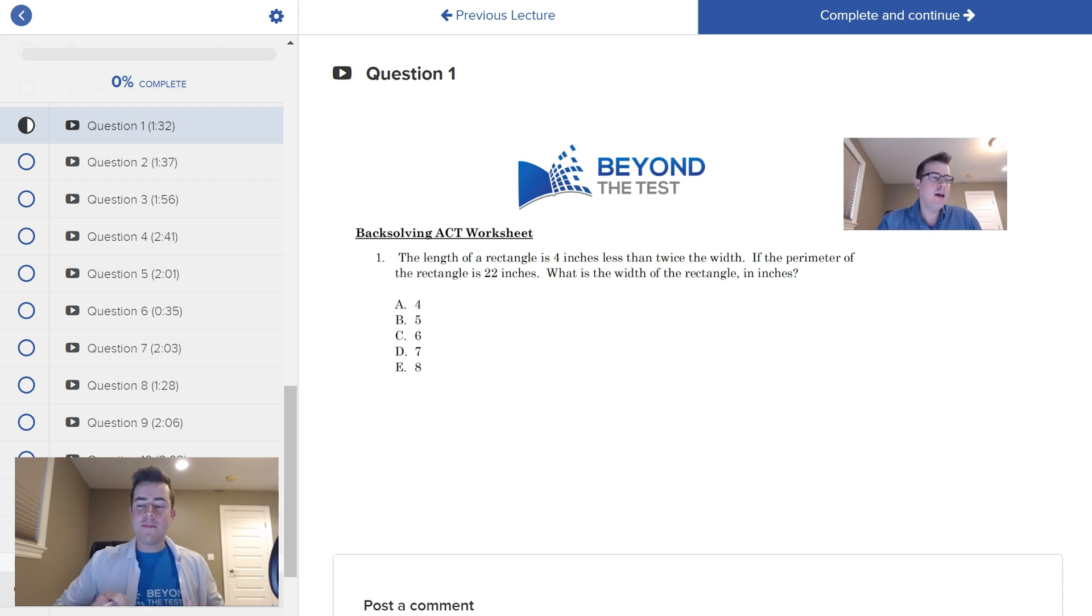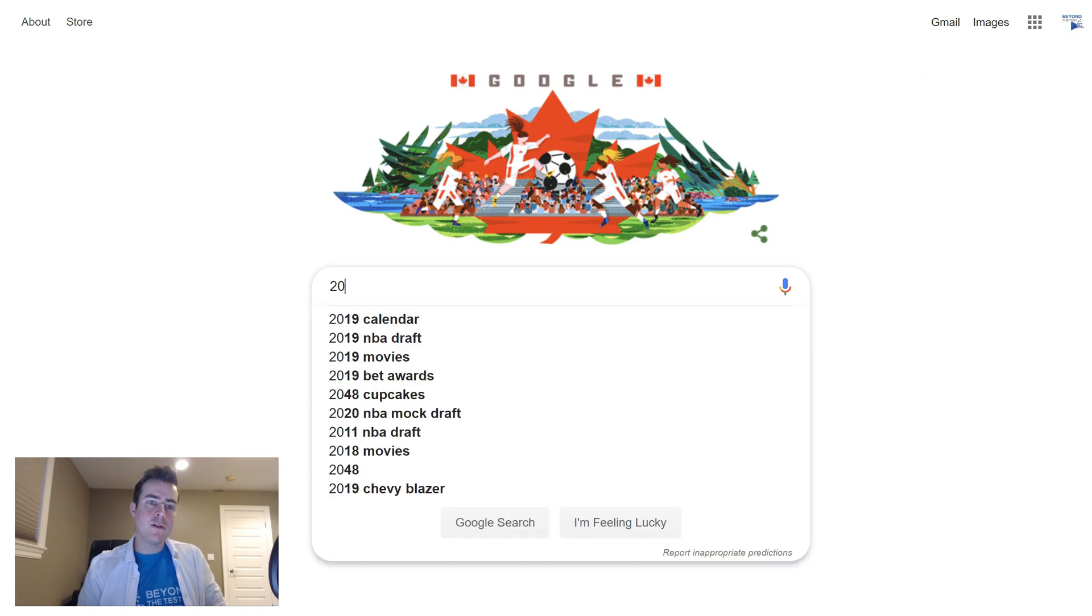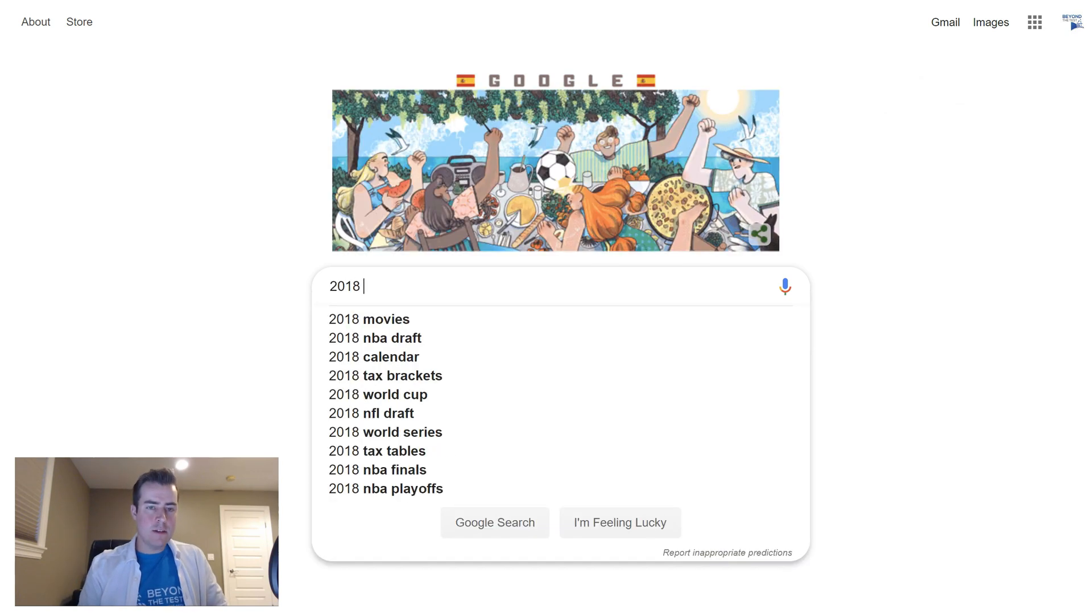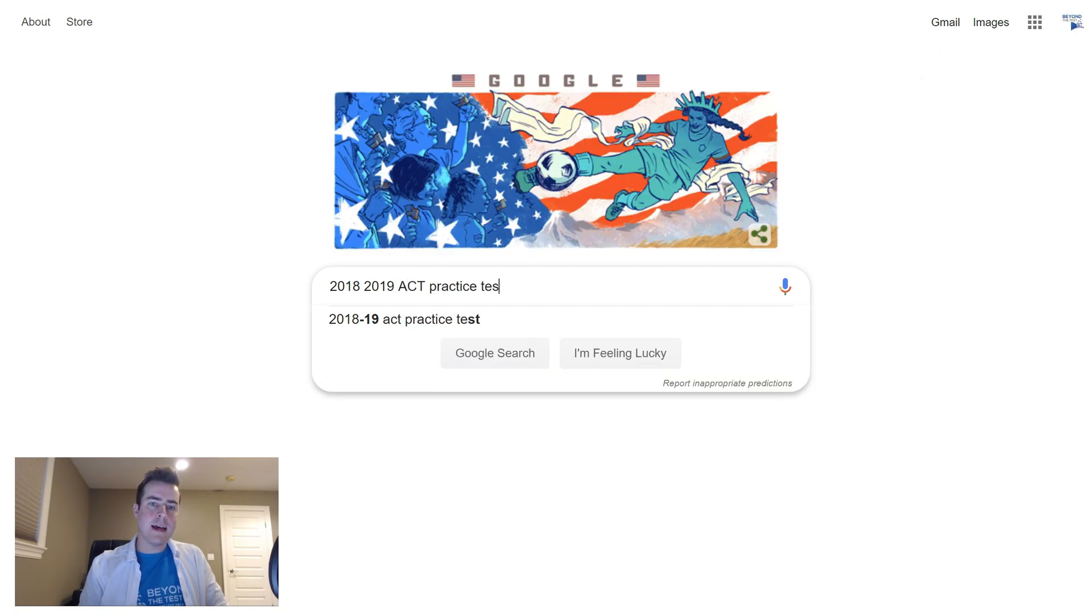Now, also, like I mentioned before, the answers to the 2018-2019 ACT exam, that math section, those answers are included in this. Now, if you need to know how to get to that test or where it is, it's very simple. All you're going to do is you're going to pull up Google here. And you're just going to Google 2018-2019 ACT practice test.